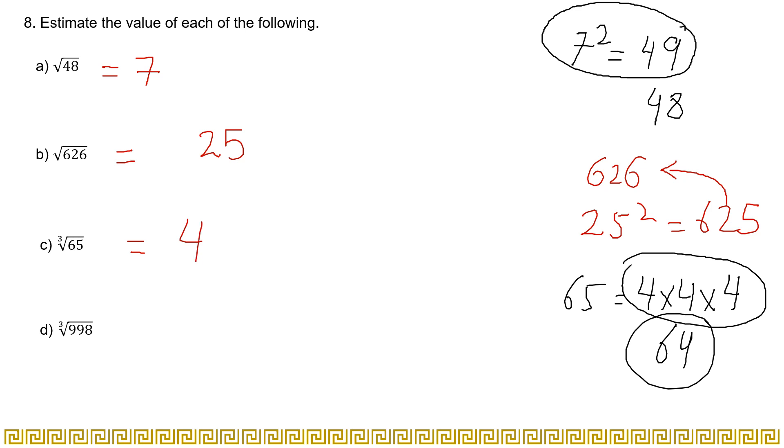Now in case of cube root of 998, again you have to multiply three numbers. That you can guess by multiplying 10 three times: 10 multiplied by 10 is 100, 100 multiplied by 10 is 1000, right? And 1000 is a value that is very nearer to 998.